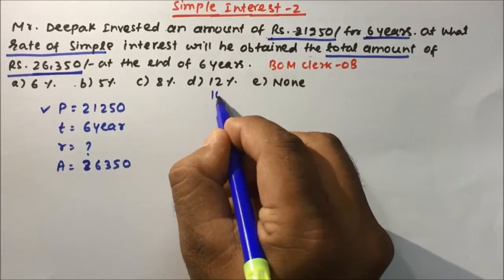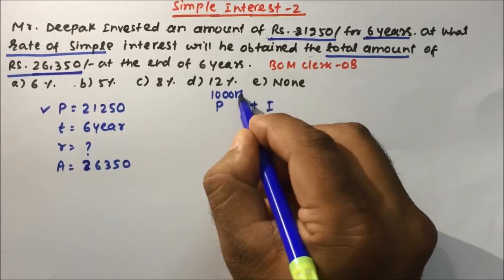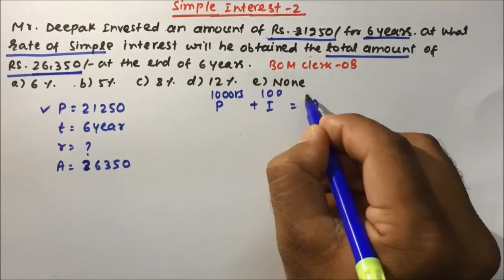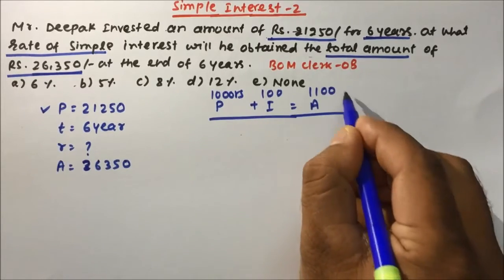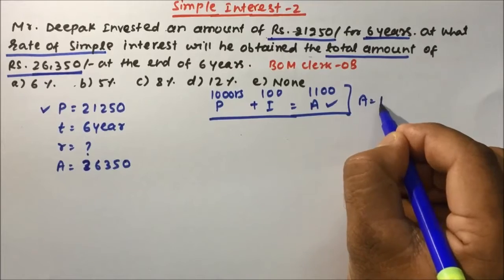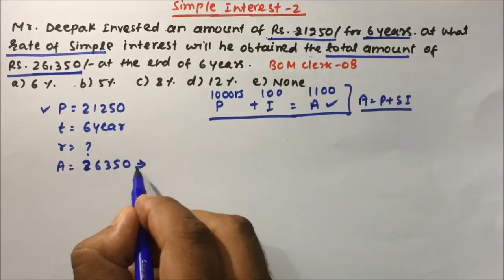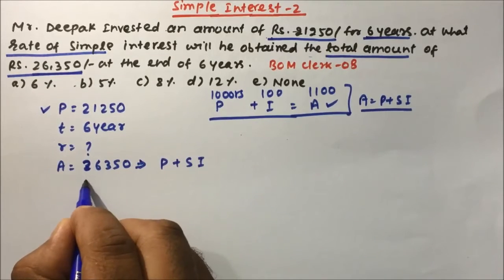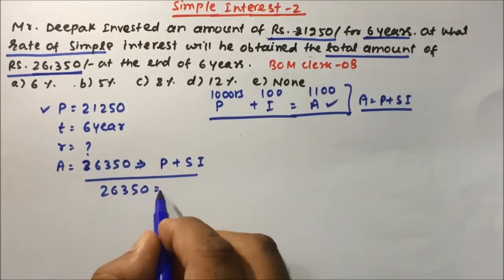For example, if you invest 1,000 rupees at 10% interest, 10% of 1,000 is 100 rupees. So after one year the bank will give you 1,100 rupees. Therefore, amount is nothing but principal plus simple interest. In this case also, amount equals principle plus simple interest: 26,350 equals 21,250 plus simple interest.